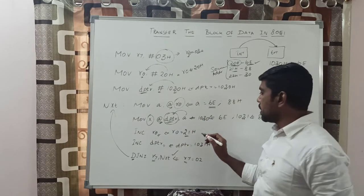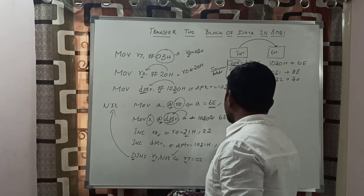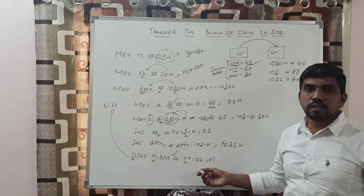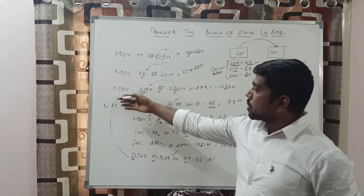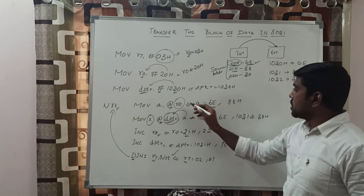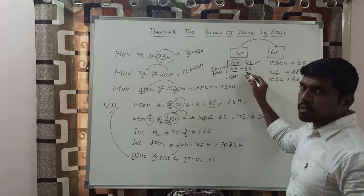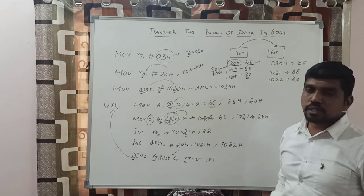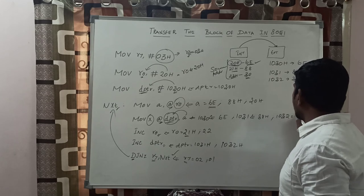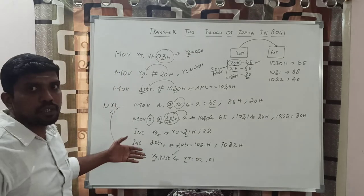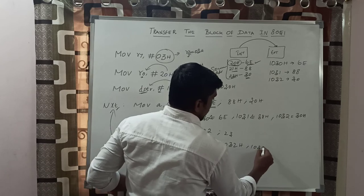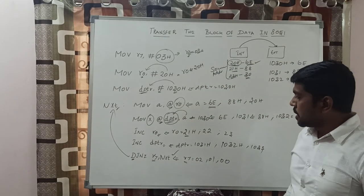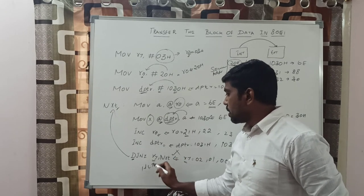Again, you increment R0 and DPTR. Now R0 value is 22h and DPTR value is 1032h. Once again you decrement R7 — R7 value becomes 01h, condition is still true, so it goes to the next label. MOV A, @R0 — R0 content is 22h, and the data at 22h is 30h, transferred to accumulator. Then MOVX @DPTR, A stores 30h to external memory location 1032h. After incrementing again, R0 is 23h and DPTR is 1033h. Decrementing R7 gives 00h, condition is false, so it finally goes to the HALT instruction.